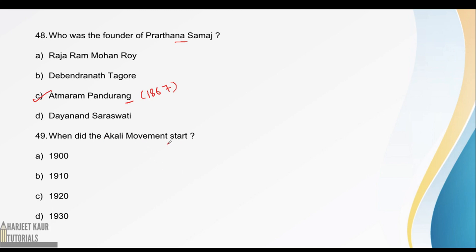Next: when did the Akali movement start? The Akali movement started in December 1920. It was started by the Akali Dal, which was based in Amritsar, Punjab. 'Akal' means timeless.